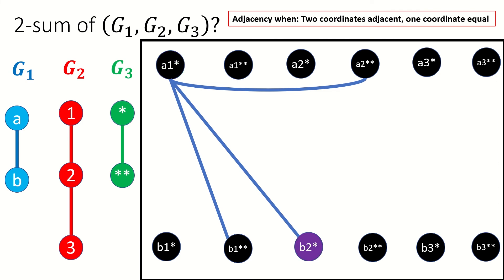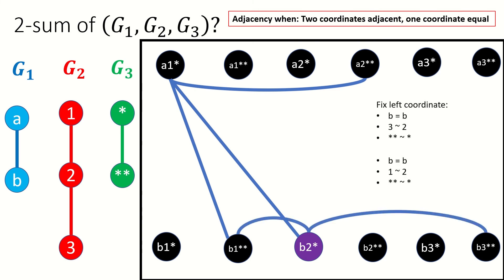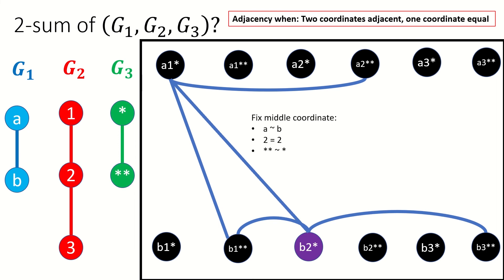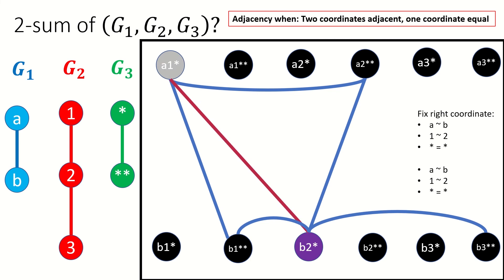Let's do one more vertex together: b2★. Again, fixing the left coordinate, b3★★ and b1★★ satisfy our criteria, as b equals b, 3 is adjacent to 2 and ★★ is adjacent to ★, as well as b equals b, 1 is adjacent to 2, and ★★ is adjacent to ★. Fixing the middle coordinate, a2★★ satisfies our criteria. Finally, fixing the right coordinate, a1★ and a3★ satisfy our criteria. I encourage you to pause the video now and find the rest of the edges yourself. Here they are.